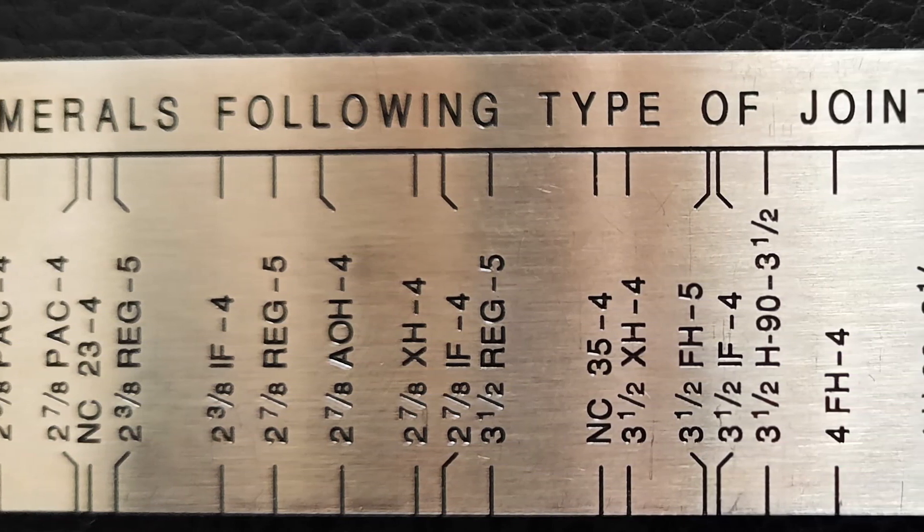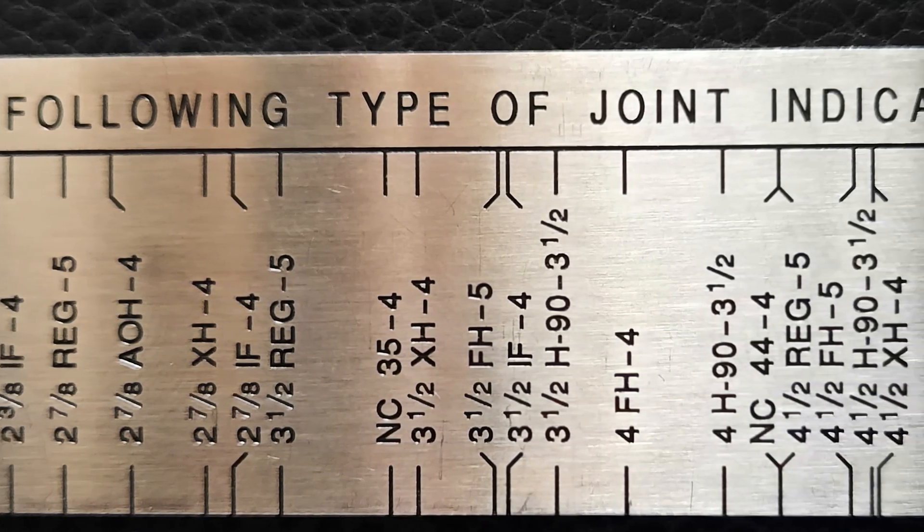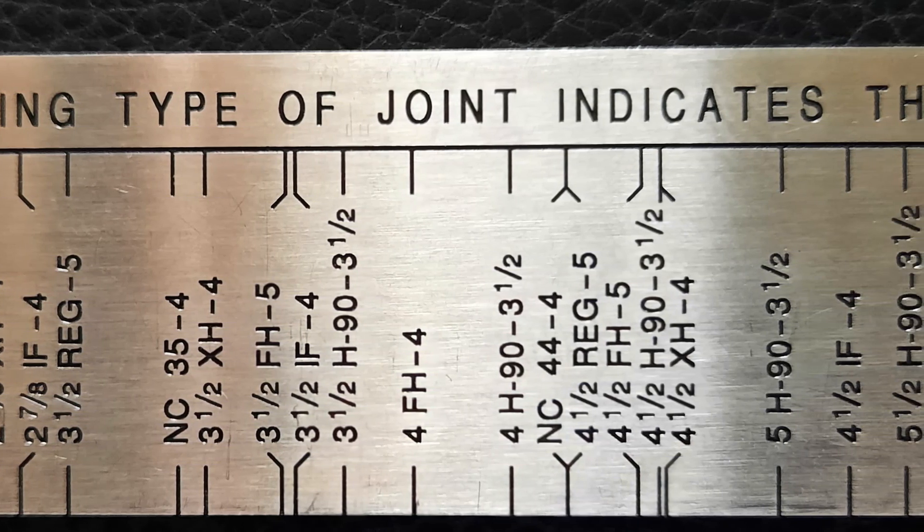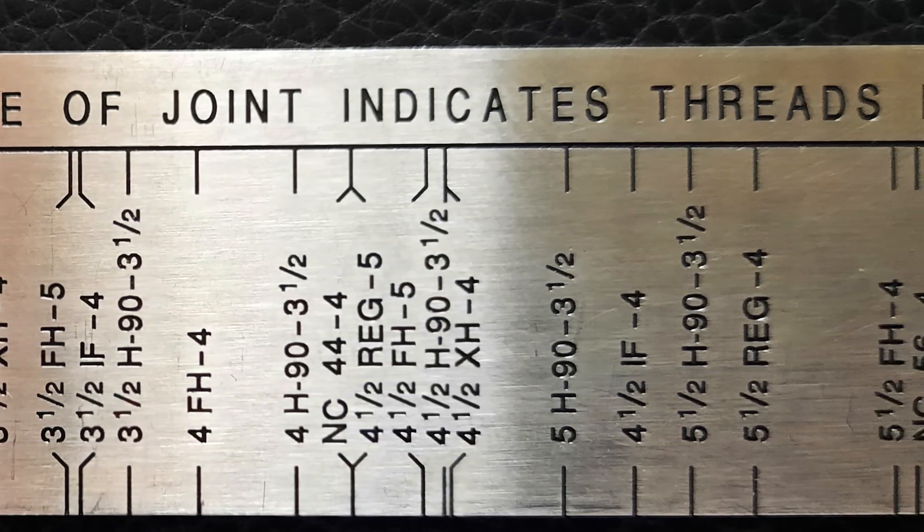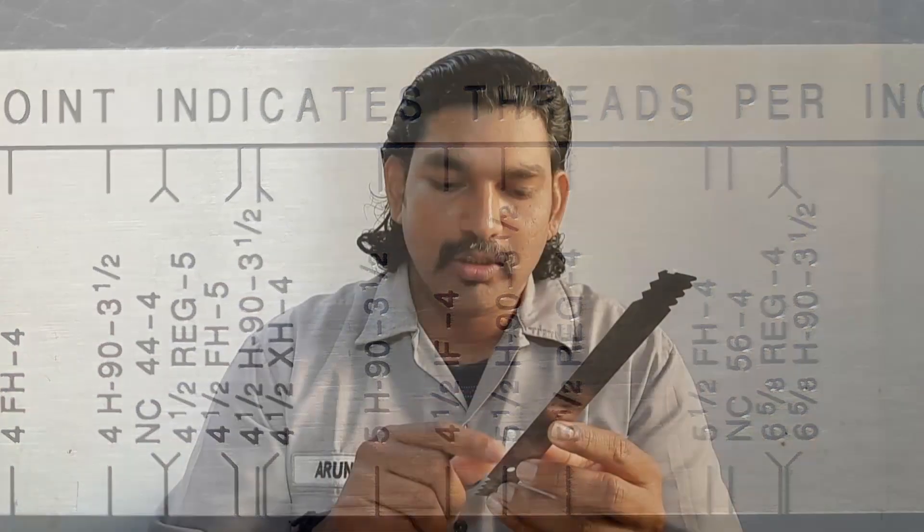The main feature is to identify the API rotary shoulder connections — that is the main objective of the tool joint identifier. Low torque modified connection details are also included, but for low torque modified connections we cannot identify directly through the tool joint. We have to measure the counterpore through the API roller and cross-check with the dimensional data.